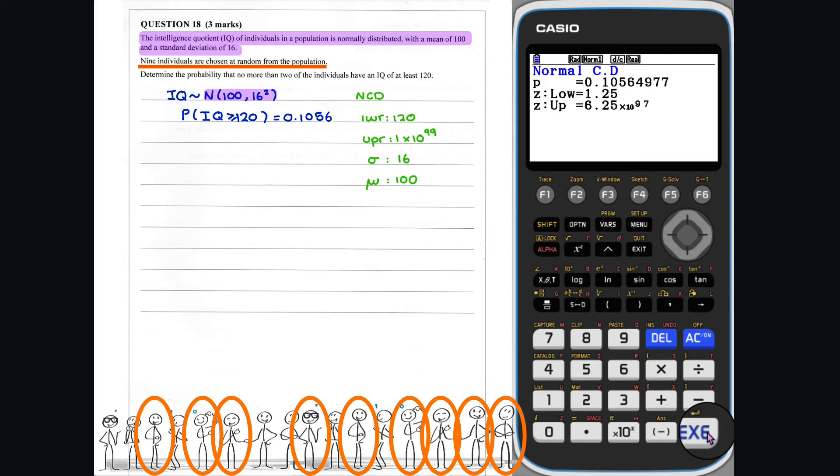So the probability that one randomly selected individual has an IQ greater than 120 is 0.1056. Now consider choosing 9 people at random, where the probability that an individual has an IQ greater than or equal to 120 is 0.1056. We can let X equal the number of people with an IQ greater than or equal to 120. X can be modelled with a binomial distribution, where the number of trials is 9 and the probability of success is 0.1056.